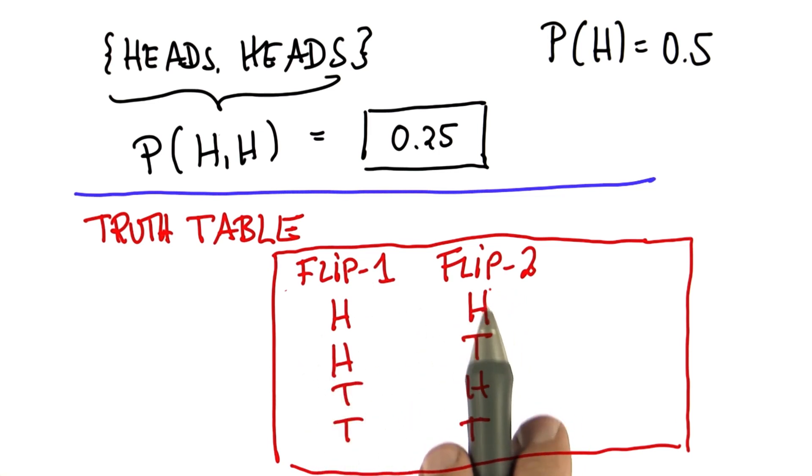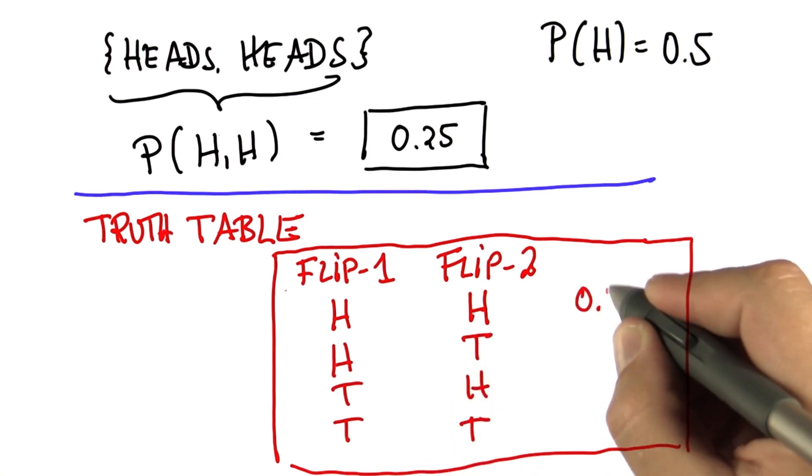Because we know that the probability of all outcomes has to add up to one, we find that each outcome has a chance of a quarter, or 0.25.